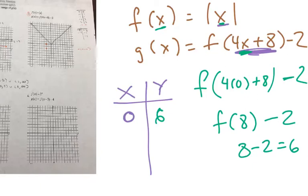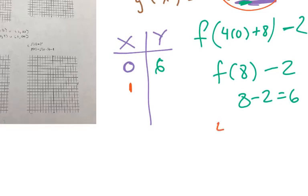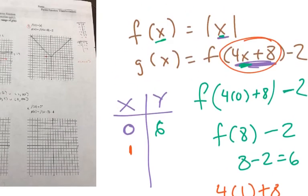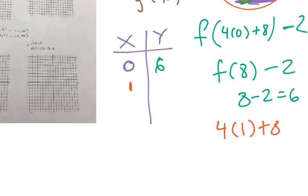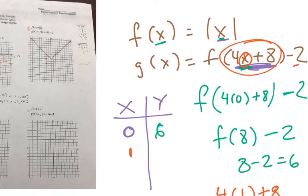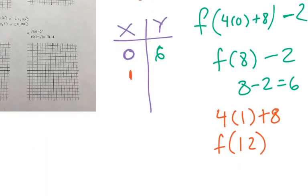So let's say I choose 1. Now I have to go here and I'm going to do 4 times 1 plus 8. We're calling that x is 1. So this gives me 12. So now I have f of 12. Again, remember you have the minus 2, so we subtract 2.